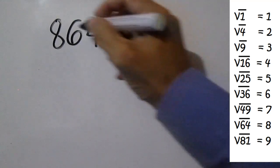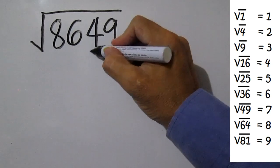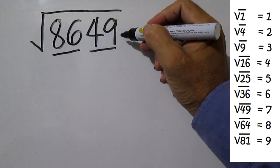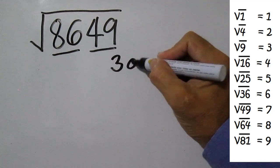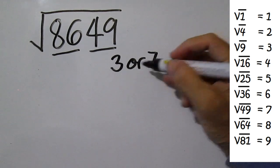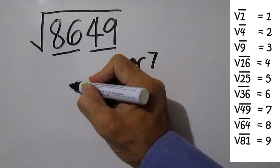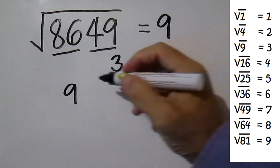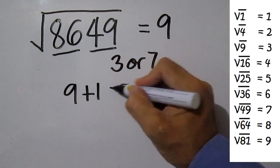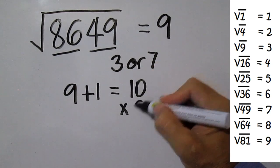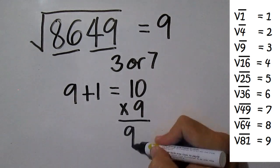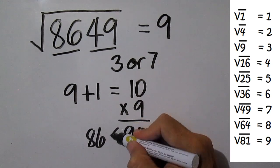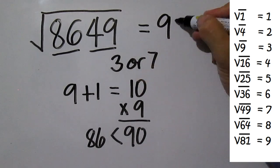Find the square root of 8,649. Group the first two digits together and the next two digits together. Write the square root of the perfect square that ends with 9 — 3 or 7. Write the perfect square of the highest number less than or equal to 86, which is 9. Multiply 9 by the next number: 9 plus 1 equals 10, times 9 equals 90. Compare this to 86. 86 is less than 90, so choose 3. The answer is 93.